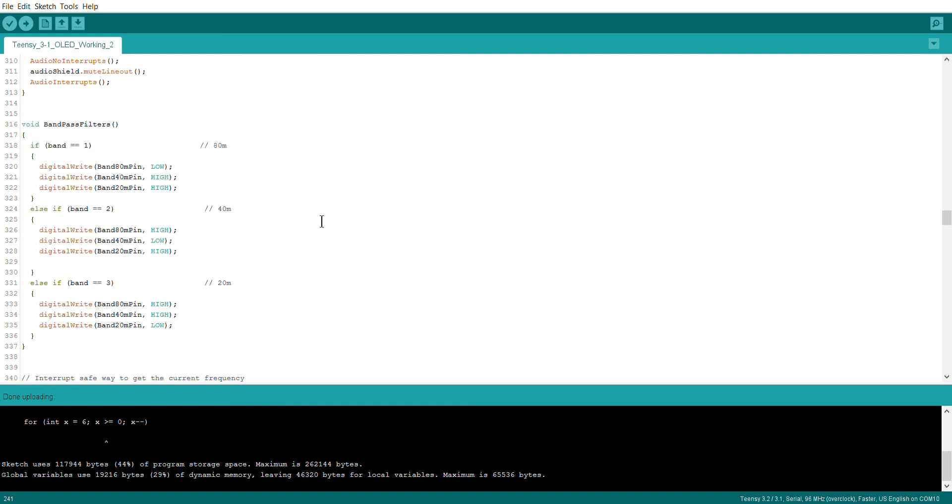And what the bandpass filters function does is, it looks to see which band it is, and then selects the appropriate pin low. So in this particular case band is one, which is 80 meters, so the 80 meter pin is set to low, and the other two are set high. And then conversely, or similarly I should say, for the 40 meter and the 20 meter band, their respective pins get set low. And as I've seen in the circuit, when that particular pin gets set low, it allows that biasing current, so again, voltage to be applied to the diode switching that particular one on. And that's essentially it. There's no other code changes in the code.